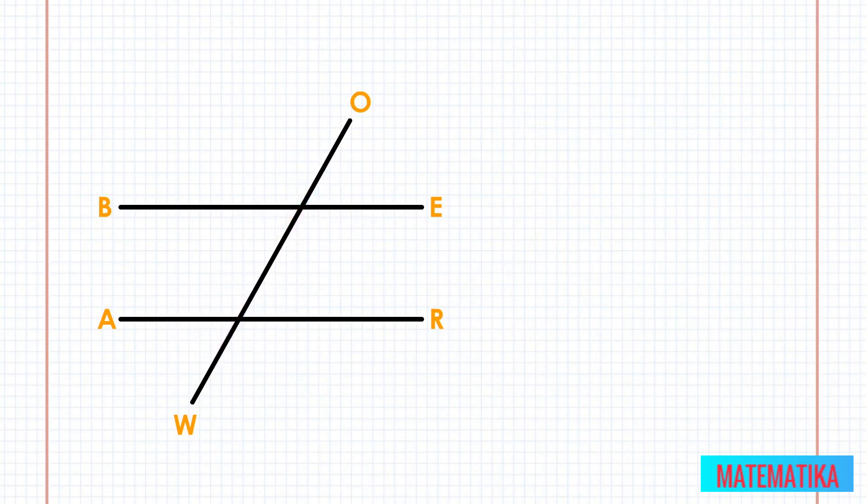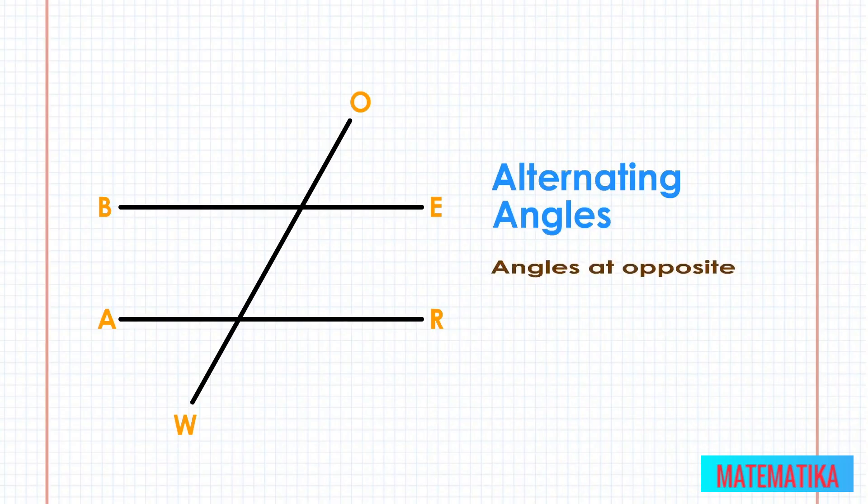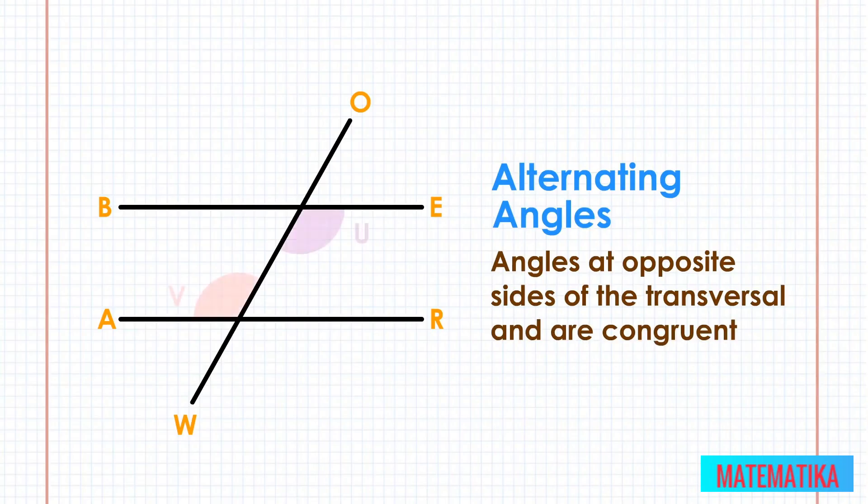Last but not least, let's look at the alternating angles. Alternating angles are pairs of angles in which both angles are either interior or exterior. They appear on opposite sides of the transversal and are congruent.